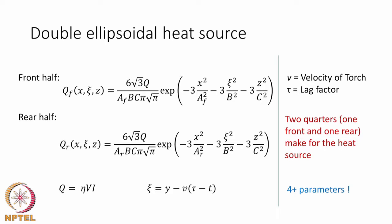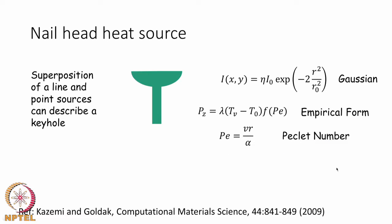This heat source is written in a way that it moves with time, and the lag factor τ can be used while applying this heat source. As you can see, there are a large number of parameters in the double ellipsoidal heat source, which means it can fit most welding heat sources — with the exception of keyhole mode welding — and match the weld pool shape quite accurately.